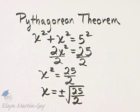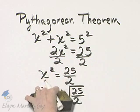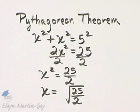But notice we are dealing with lengths. x is a length. So I will use only the positive square root of 25 over 2, or simply square root of 25 over 2.